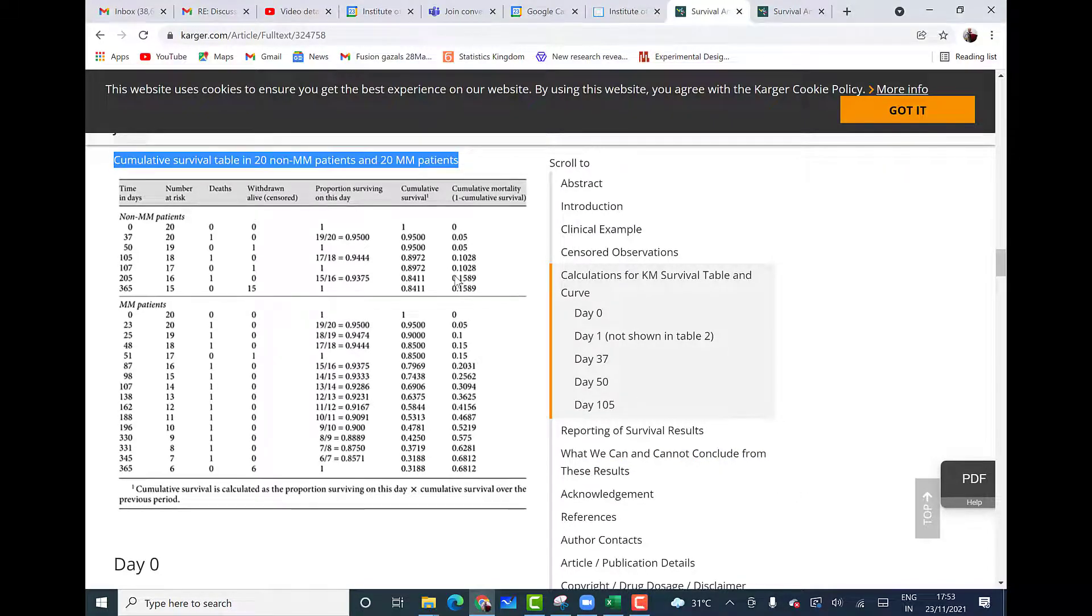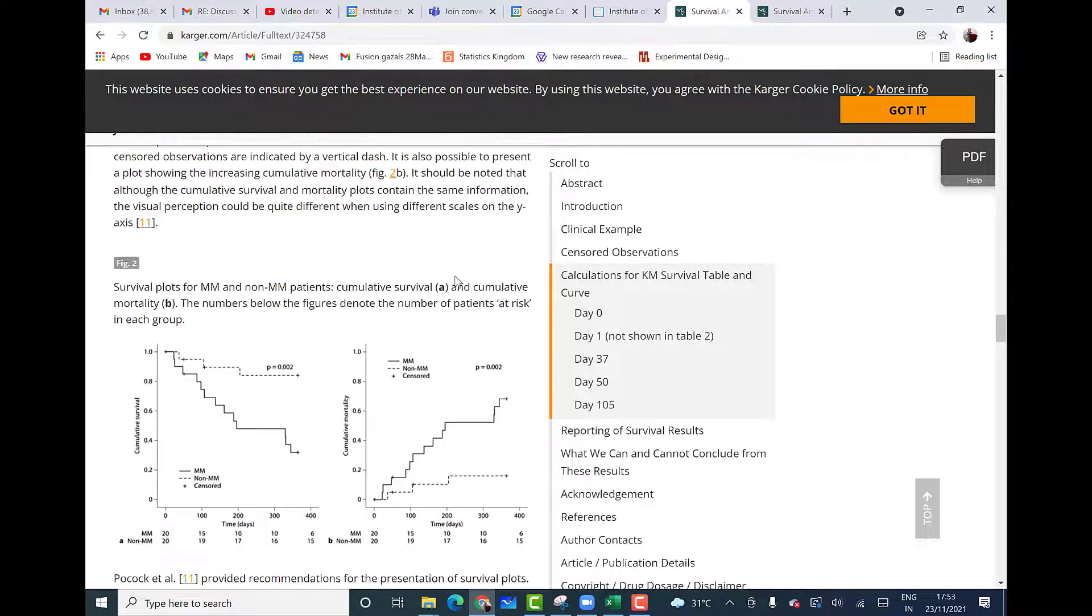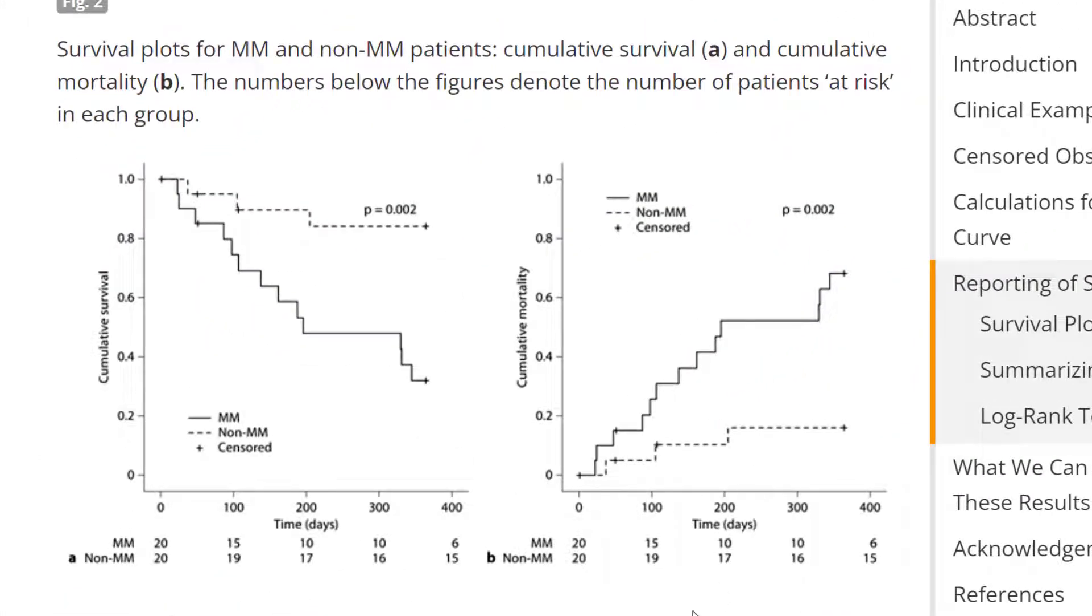The website article also shows graphical output below that. And you can see that output over here. And the first one shows survival probabilities. The lower one shows MM category of patients and the dotted one shows non-MM category of patients. This is the survival probability. This is cumulative survival.